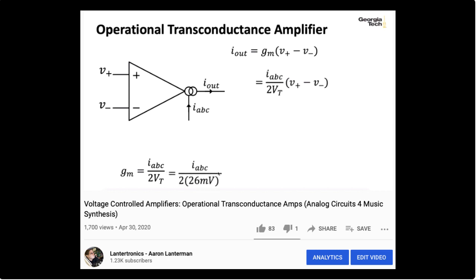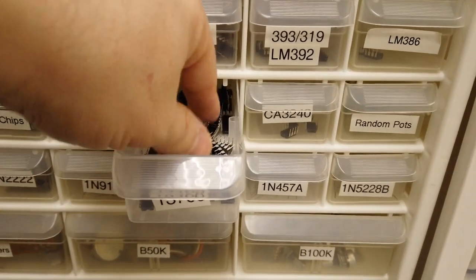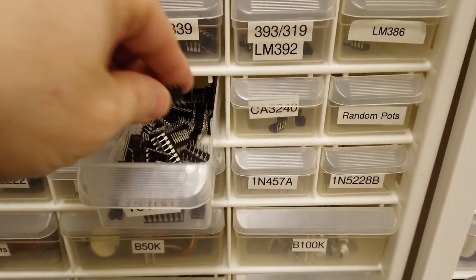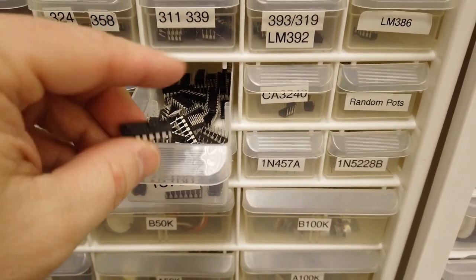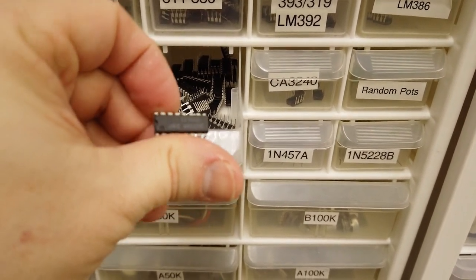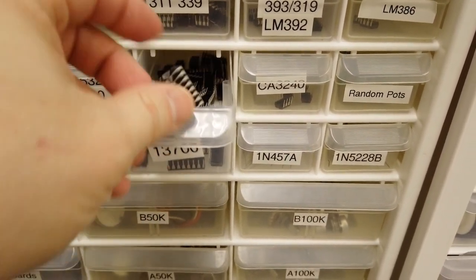Much of my analog circuits for music synthesis class is a meditation on the OTA. The LM13700 is particularly popular among people who currently design analog synthesizers, offering two OTAs and two buffers in one package.